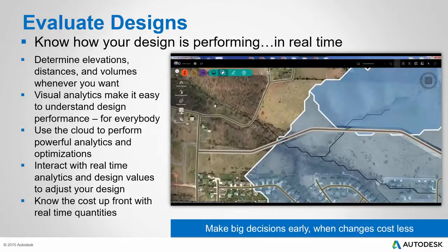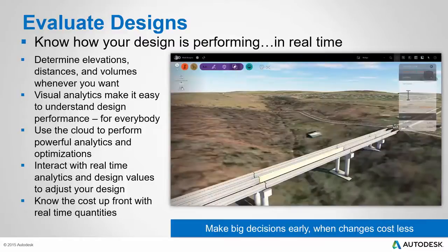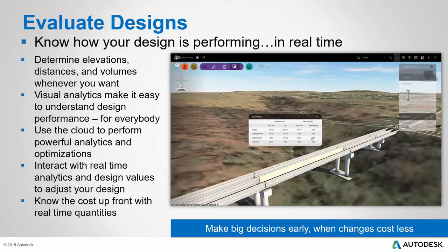And on top of all that, we can also get real-time quantities on some of the key items of our model. Here our designer is selecting a road and getting information about the culverts, inlets, manholes, pipelines, and other infrastructure associated with that road. And we can do a similar operation with a bridge to give us quantities for the major structural components of that bridge. And with quantities, we can of course determine cost, and knowing costs up front is a huge advantage in any project so that we can make important decisions and possibly change direction much earlier in the design process than later when it becomes very expensive to do so.